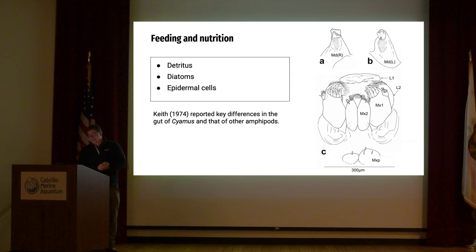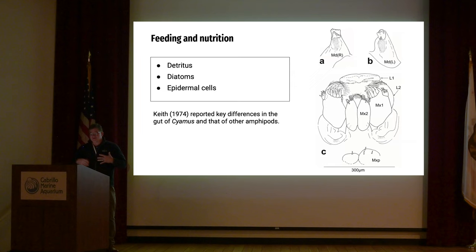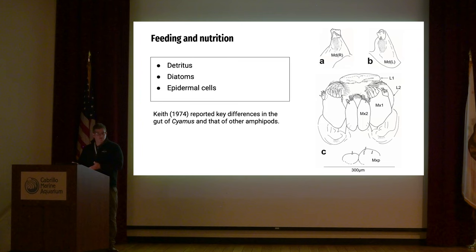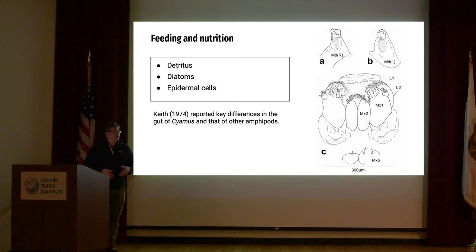When we look at their feeding and nutrition — what's on a whale, what could they possibly be feeding on? There are multiple studies on this. There is detritus — dead organic matter — found in the guts of Cyamids and also in the guts of skeleton shrimp. When you analyze their gut contents, you also find diatoms — single-celled eukaryotes that grow in films on these moving hosts. We find them in the guts of whale lice, so clearly they're ingesting them. We also find epidermal cells.